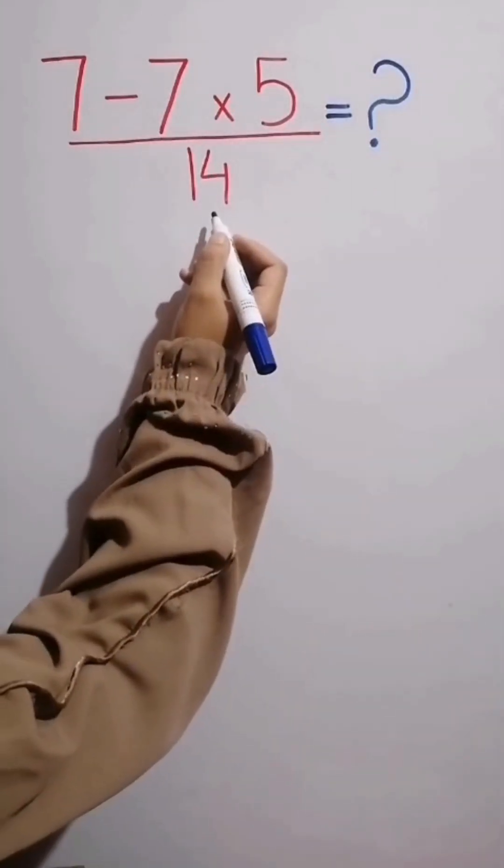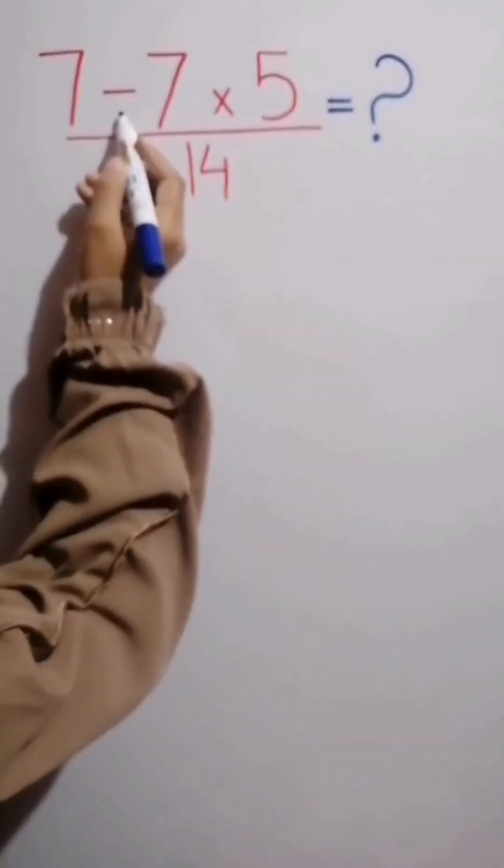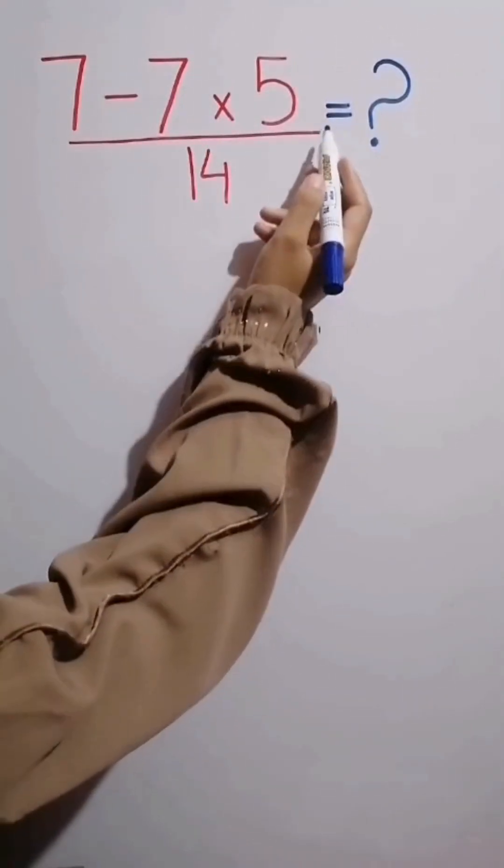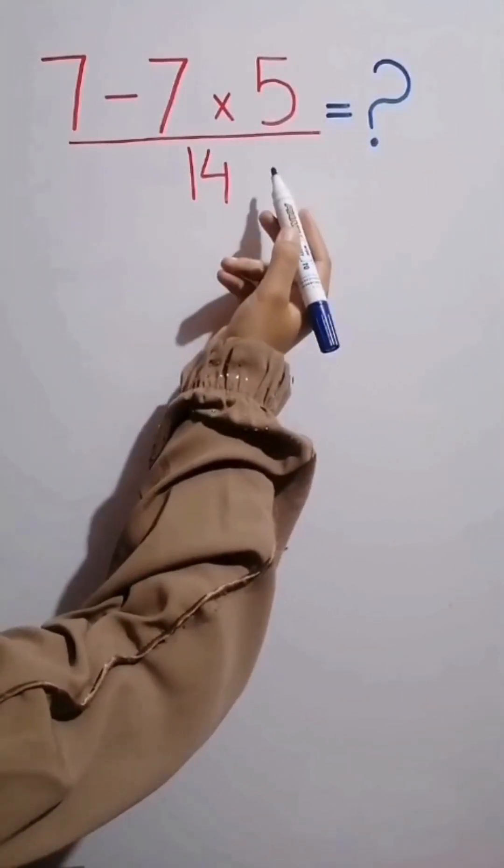Hey friends, welcome to the IQ Surge channel. 7 minus 7 times 5, over 14. What is the answer to this question? Can you solve it?